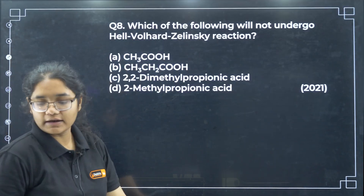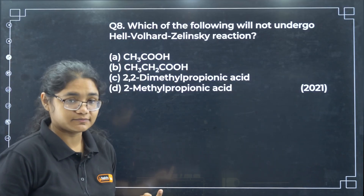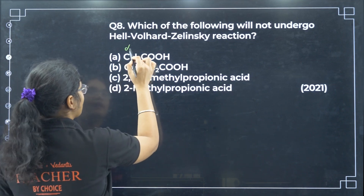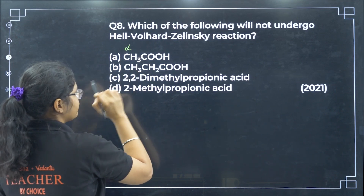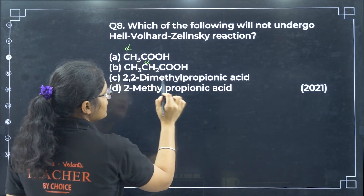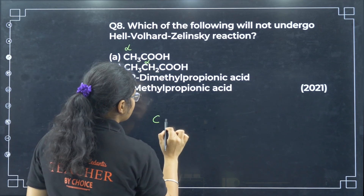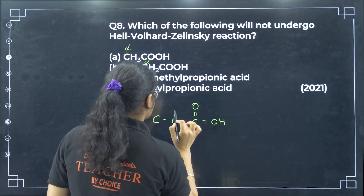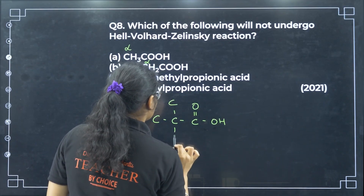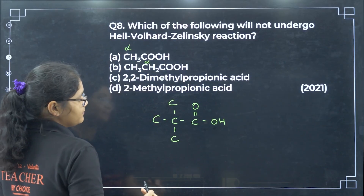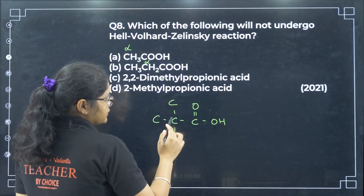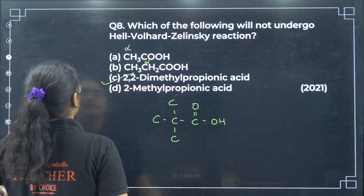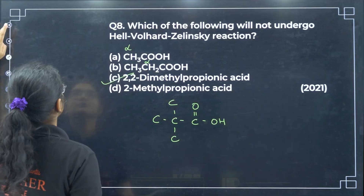Which compound will not undergo HVZ reaction? For HVZ reaction we need alpha hydrogen. The first two compounds have alpha hydrogen. 2,2-dimethylpropanoic acid does not have any alpha hydrogen, so it will not undergo HVZ reaction — option C.